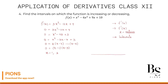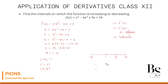Draw the number line and mark points 1 and 3. The intervals are: (-∞, 1), (1, 3), and (3, +∞). Choose x = 0 from (-∞, 1): f'(0) = 3(0) - 12(0) + 9 = 9, which is positive. Since f'(x) > 0, the function is increasing on (-∞, 1).